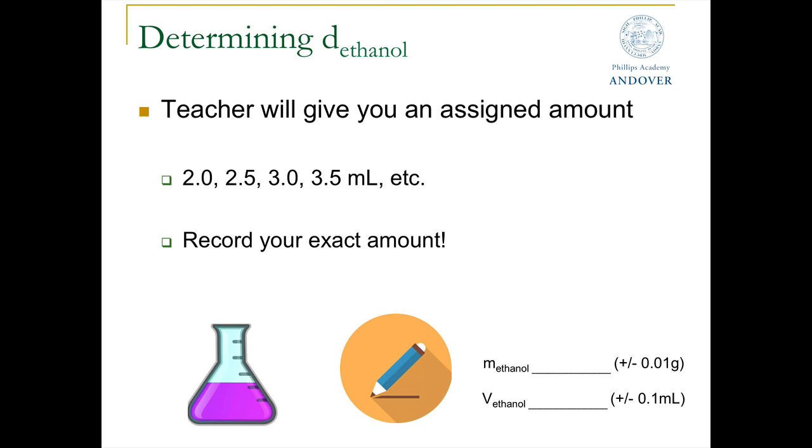This step is actually relatively simple. Your teacher, before you enter lab, is going to assign each group with a specific volume of ethanol to use. Your task is just to record the mass of that ethanol sample and the volume of that ethanol sample. Keep in mind that your teacher may not give you exactly 2.0, 2.5, etc. milliliters of ethanol, so it's important that you record your exact amount. At this point, let's go into the lab and get a little more instruction on how this step works. Then we will come back and discuss how we will assess the average density of ethanol using the graphing approach.